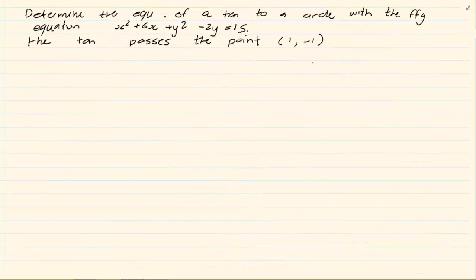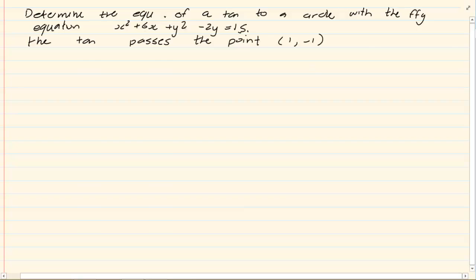We're going to do equations of a tangent. But this time, it's not going to have a drawing. Determine the equation of a tangent to a circle with the following equation. X squared plus 6X plus Y squared minus 2Y is equal to 15. The tangent passes the point 1 and minus 1. We know to get the equation of a tangent, I need M and I need a point. Our point is sorted out, 1 and minus 1. But the gradient is a problem.